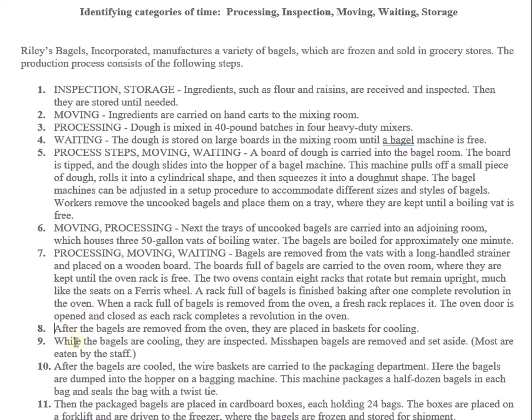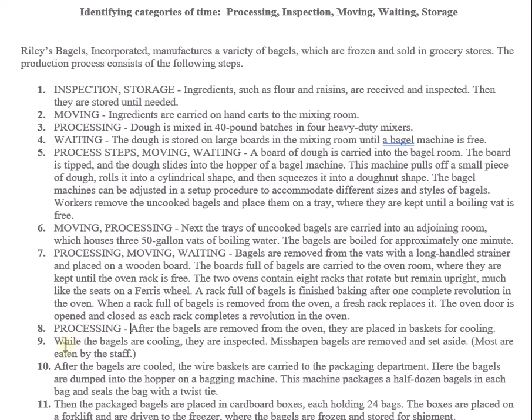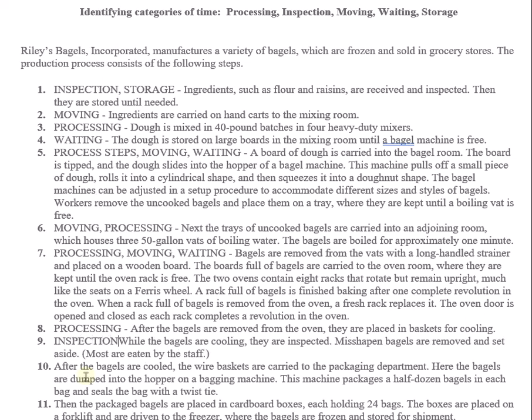Step eight: after the bagels are removed from the oven, they're placed in baskets for cooling. Cooling is actually a processing step — it's part of manufacturing bagels. Step nine: while the bagels are cooling, they're inspected, so that's another inspection step.